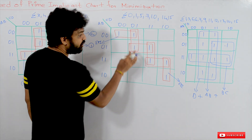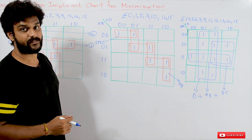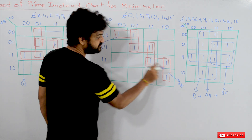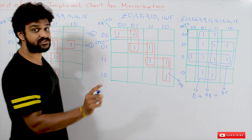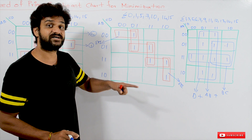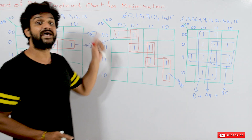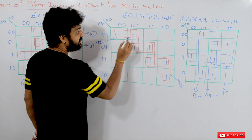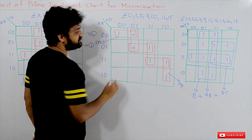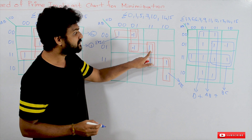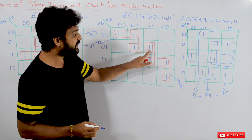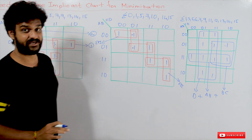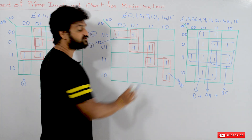How many redundant prime implicants are there? There are no redundant prime implicants. You may assume some are redundant, but the definition of a redundant prime implicant states that each and every term of that prime implicant must be covered by essential prime implicants. For example, this prime implicant covers two terms — one term is covered by an essential prime implicant, but the other term is covered only by a non-essential prime implicant. So these are not redundant prime implicants; they are just prime implicants.